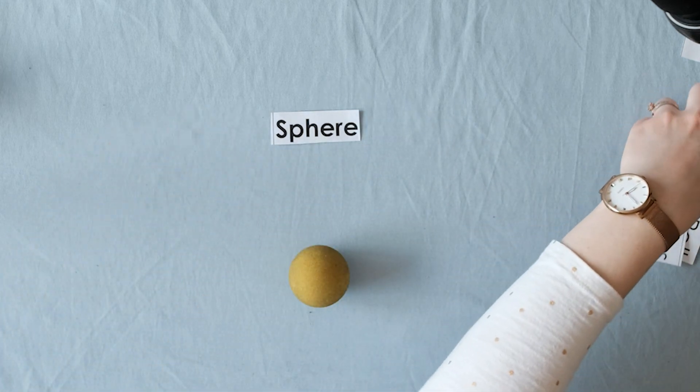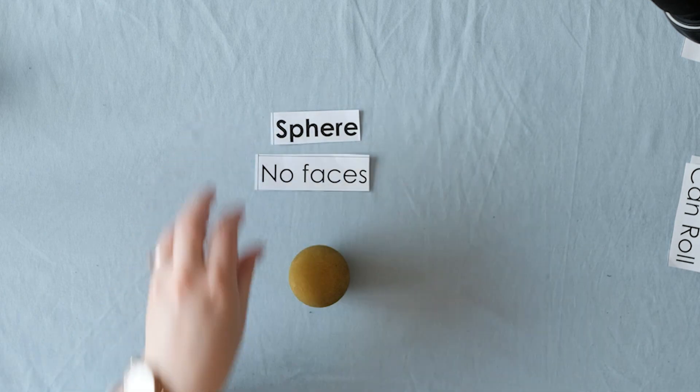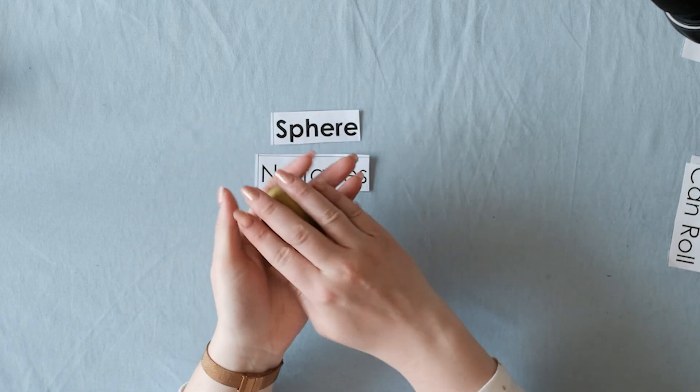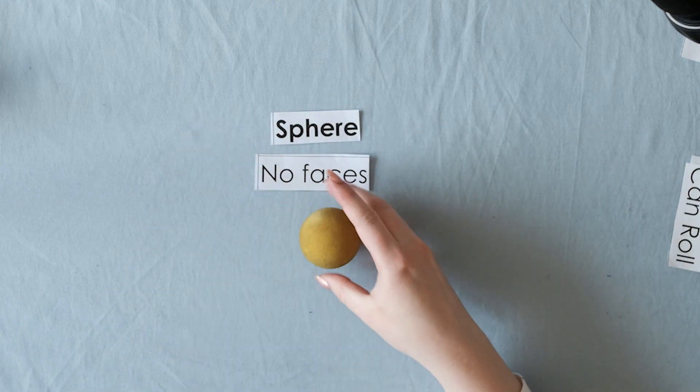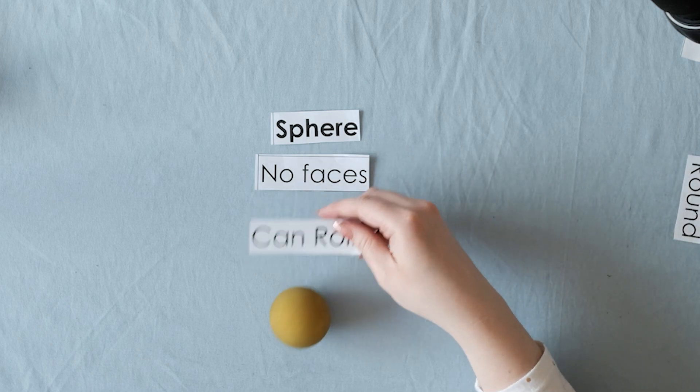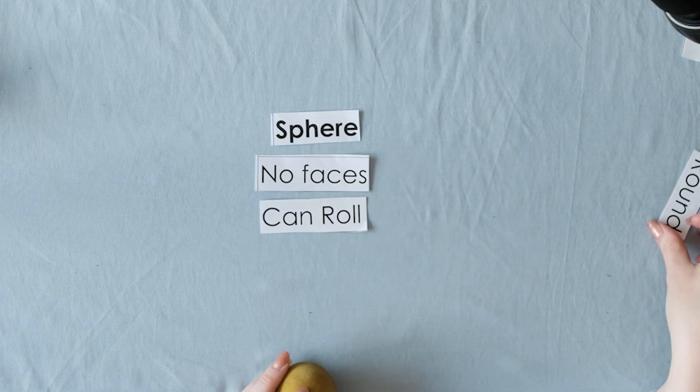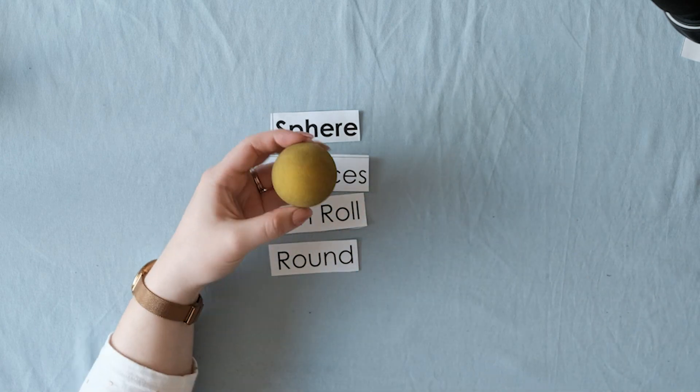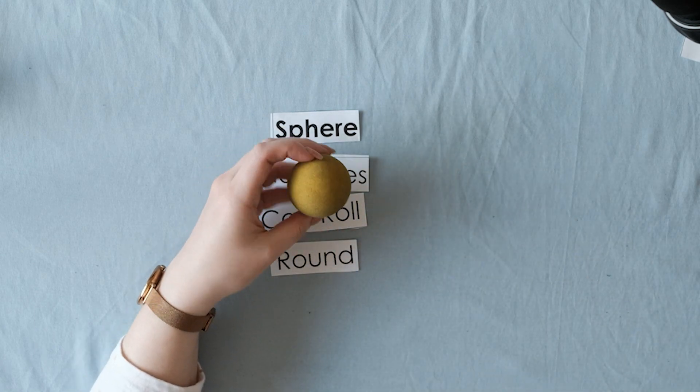What's different about it? Well, it has no faces, so it does not have any flat parts. It can roll, and it is round like a ball. What else do you notice in your house that's this shape?